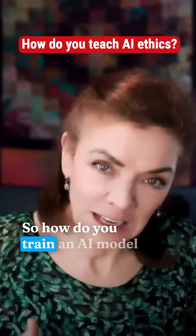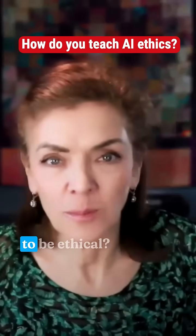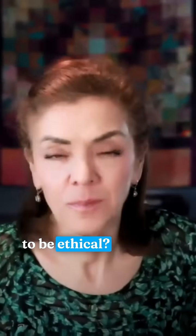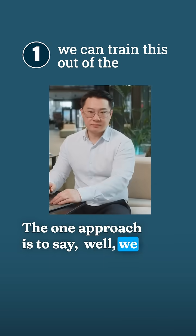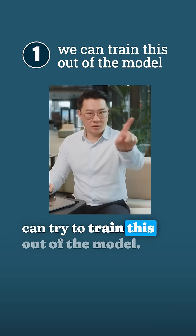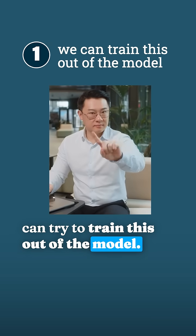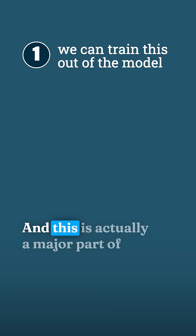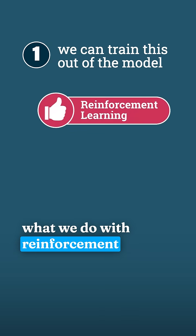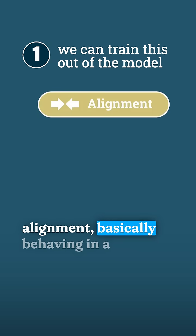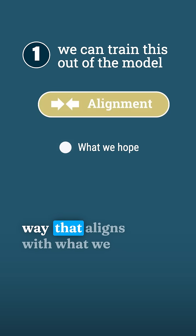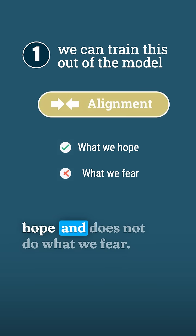So how do you train an AI model to be ethical? One approach is to say we can try to train this out of the model. This is actually a major part of what we do with reinforcement learning — that question of alignment — basically behaving in a way that aligns with what we hope and does not do what we fear.